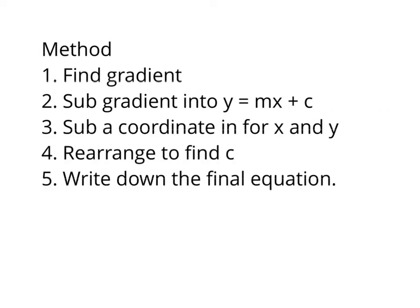So these are steps we're going to follow. Step one, we're going to find the gradient as normal. We should be comfortable doing that now. Then we're going to substitute that gradient in here for m to the equation y equals mx plus c. Then we're going to choose one of our coordinates, whichever one we like, and we're going to replace x and y with whatever the numbers are in the coordinate. That will then give us a value for y, m and x, which will leave us being able to find the c value.